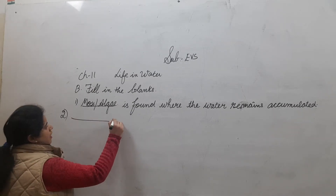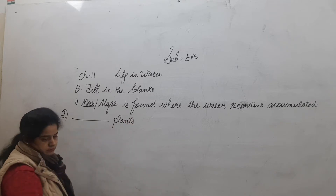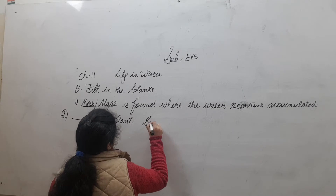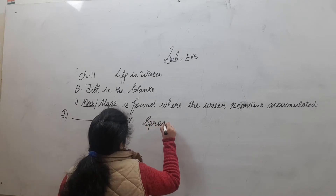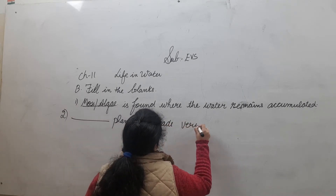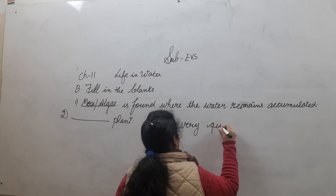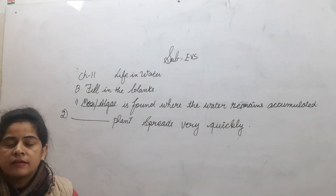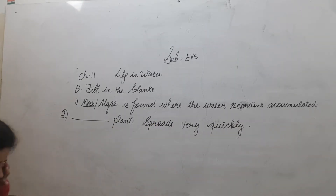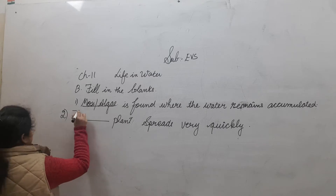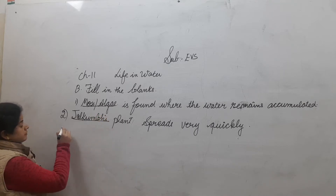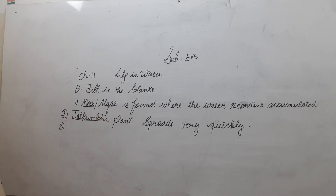Next: dash plants spread very quickly. I know you know this answer. It is Jalcumbi. And what is the scientific name for Jalcumbi? It is Pistea satriotia.